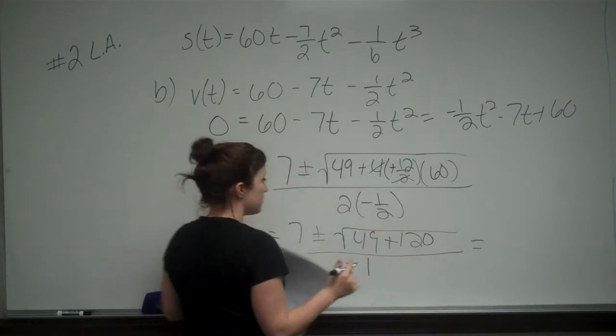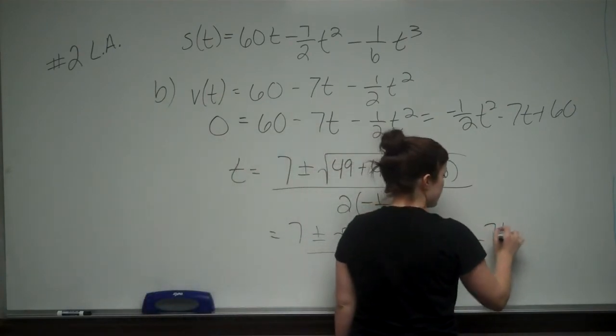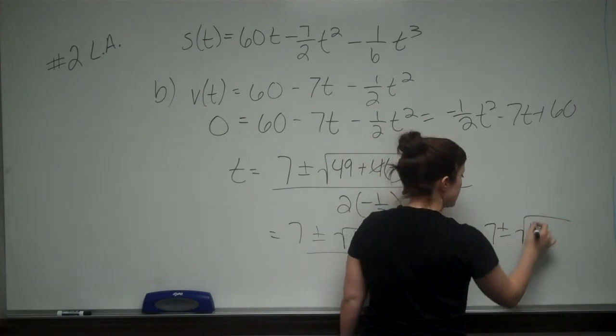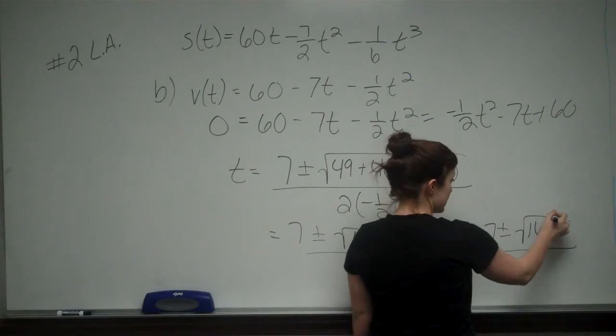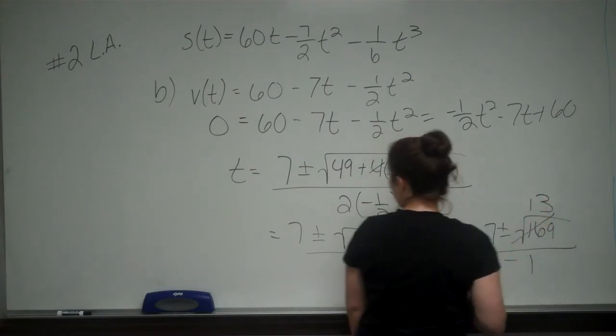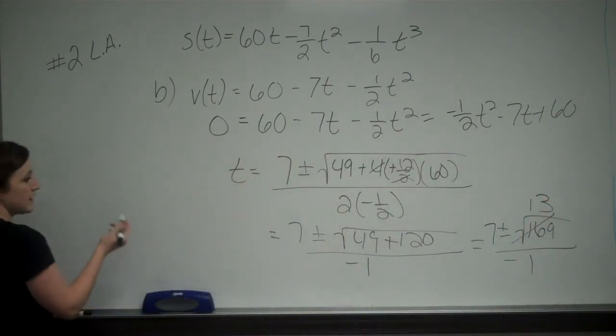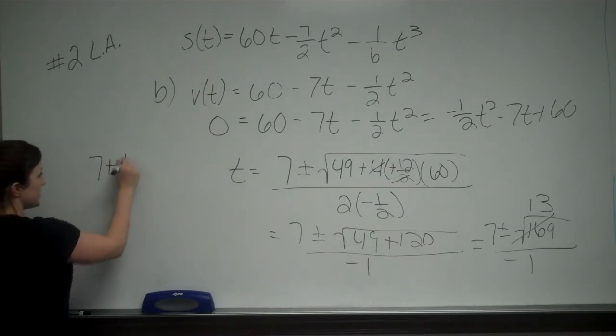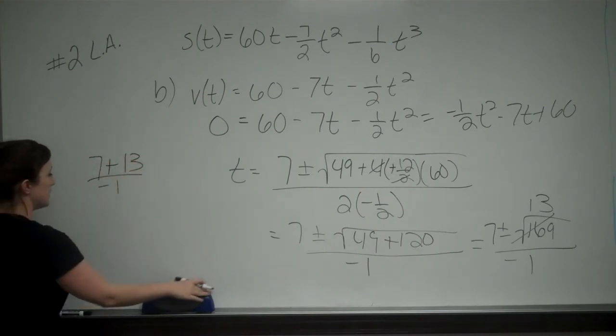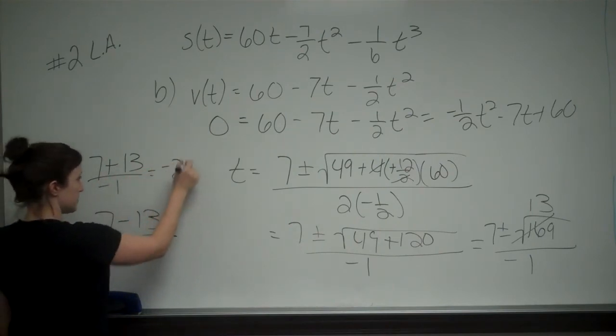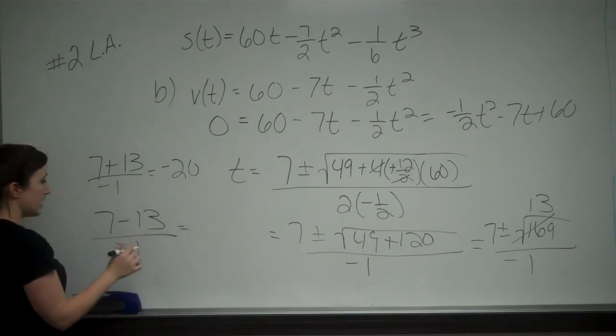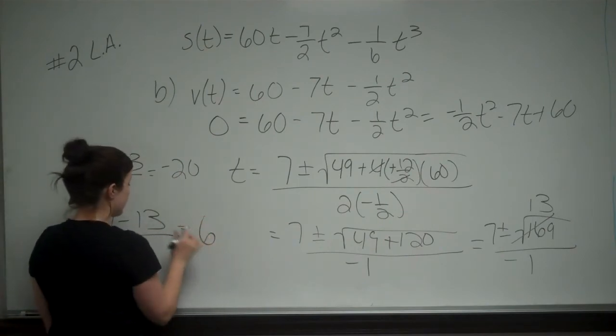So we get 7 plus or minus the square root of 169 over negative 1. Well, the square root of 169 is 13. So going over here, we have 7 plus 13 over negative 1, and 7 minus 13 over negative 1. So this will give me negative 20, and this will give me positive 6.